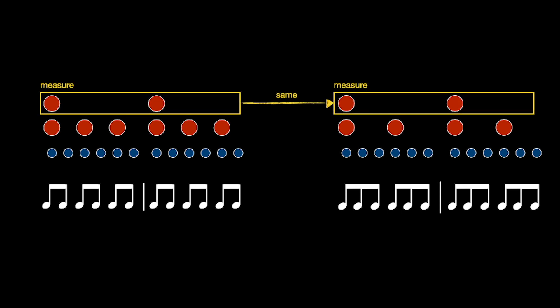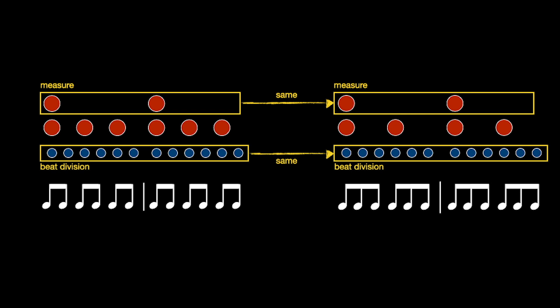When you switch from straight triple to compound duple, the measure-level pulse is the same, and the beat divisions are also the same. The thing that changes is the beat itself — it goes from two-plus-two-plus-two to three-plus-three in terms of beat divisions.